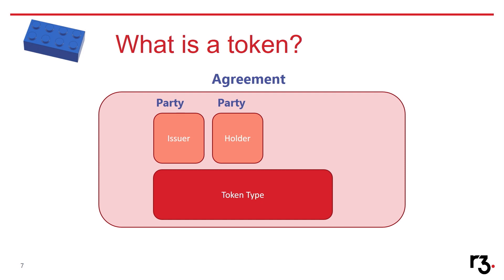It's worth mentioning that issuer is always a well-known party in Corda terminology, and holder can be anonymized. It also holds a token type, which can be anything — it can be a cat, it can be a pizza, it can be an asset, it can be a house.